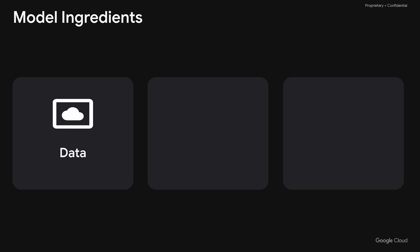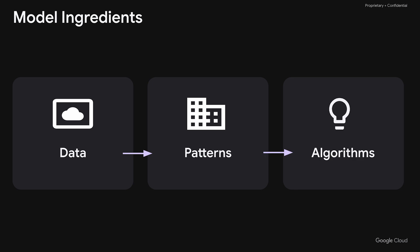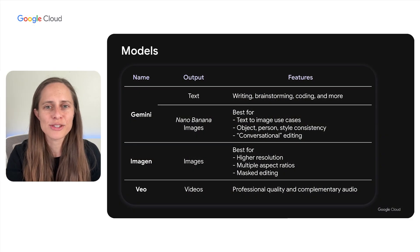In simple terms, models use a large amount of data to identify patterns. Developers add in algorithms or instructions that help the model make decisions and recommendations. It's not so intimidating after all. There are a lot of model names floating around right now across platforms and providers, and a lot of model types — LLMs, transformers, diffusion models, and more. To keep it simple, here's what you need to know about Google's models.